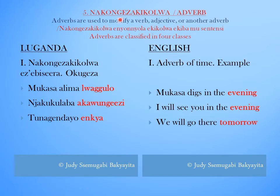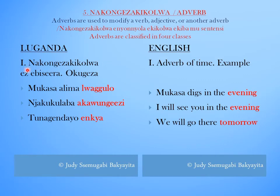The fifth part of speech is Nakongeza chikolwa, which is Adverb in English. Adverbs are used to modify a verb, adjective, or another verb. Adverbs are classified into four classes. Class one is Nakongeza chikolwa eze visera — Adverb of time.